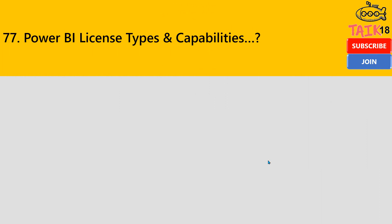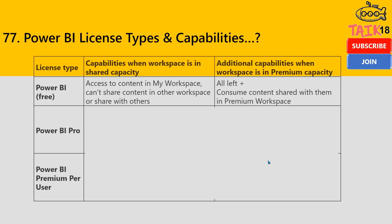The next question is Power BI license type and capabilities. What are the license types we have in Power BI and their capabilities? If you see this table, you can see Power BI Free, Power BI Pro, and Premium Per User. The capabilities are split between when a workspace is in shared capacity and additional capabilities when a workspace is in premium capacity.